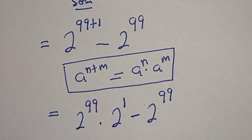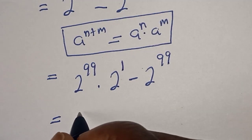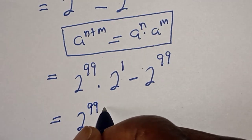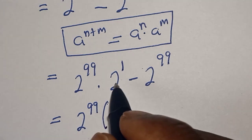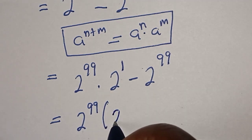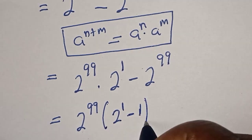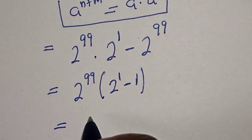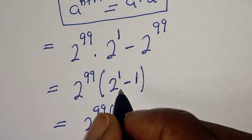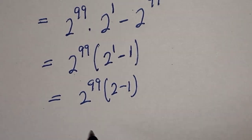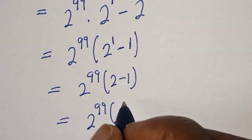2 raised to power 99 is common, so let's bring it out. We have 2 to the power of 99 times bracket 2 to the power of 1 minus 1, which equals 2 to the power of 99 times bracket 2 minus 1.